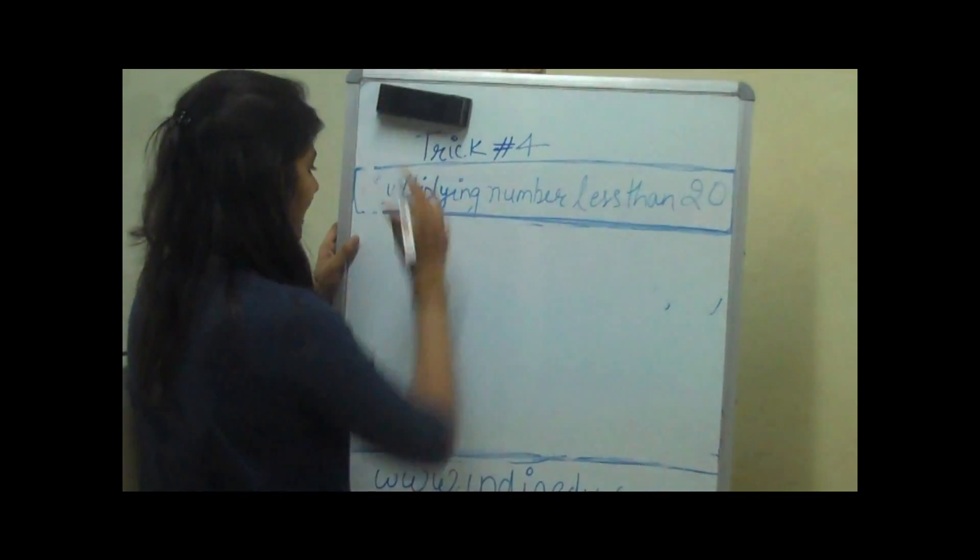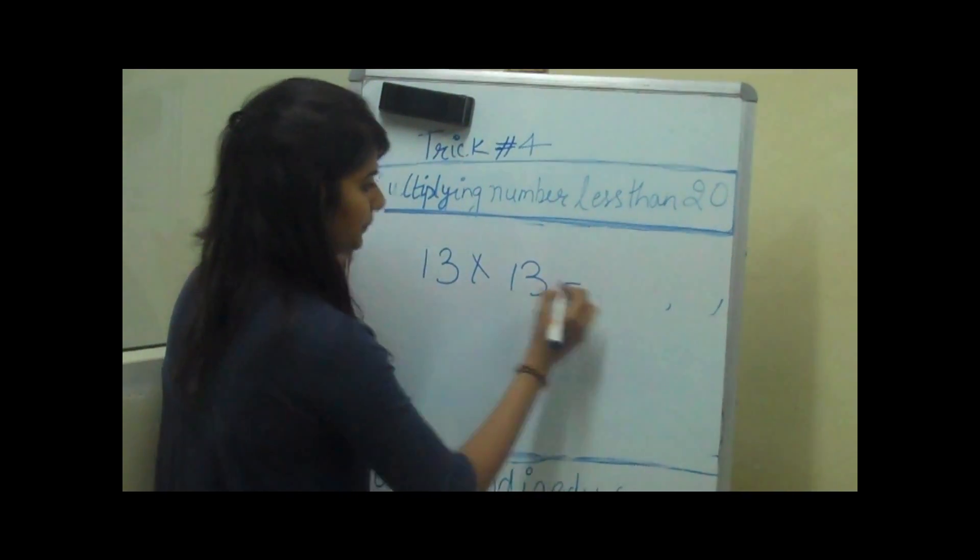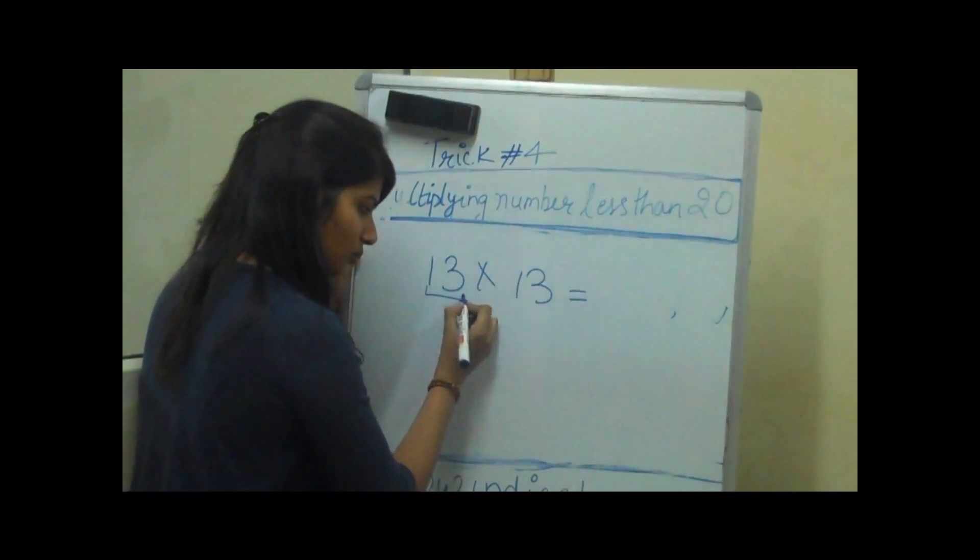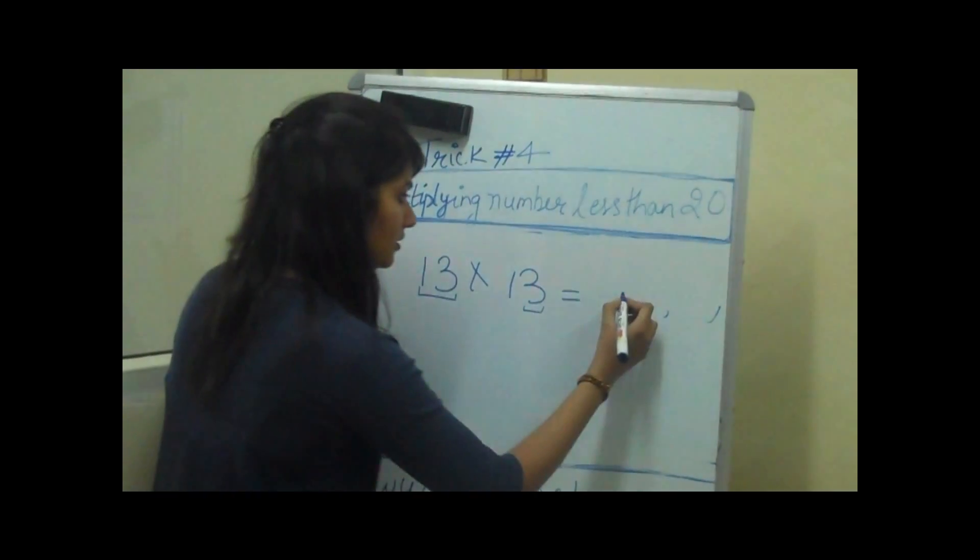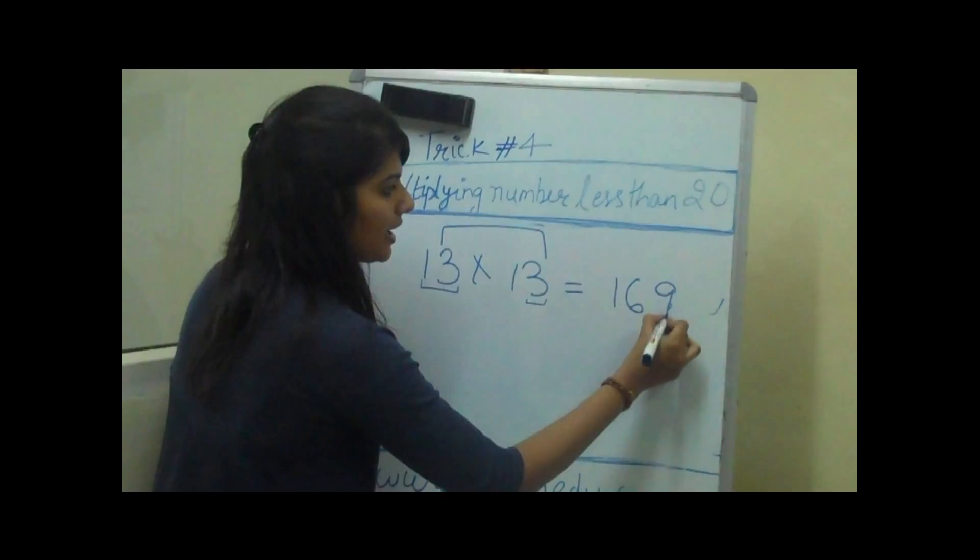Now we will take another example in which we will multiply 13 with 13. We will add again this whole number to the last digit which is 16 and then multiply 3 with 3 which is 9.